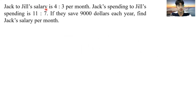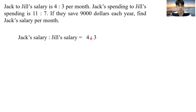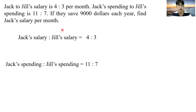Jack to Joe's salary is 4 to 3 per month. Jack's spending to Joe's spending is 11 to 7. If they save $9,000 each year, find Jack's salary per month.